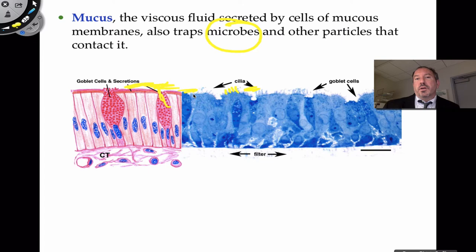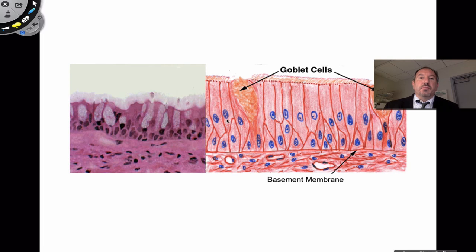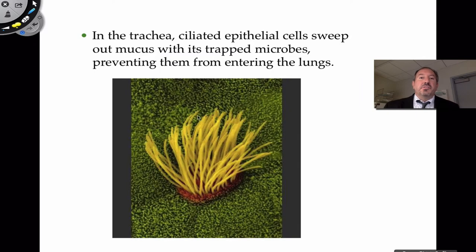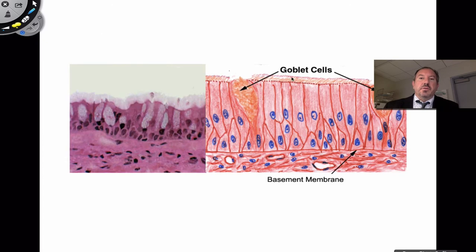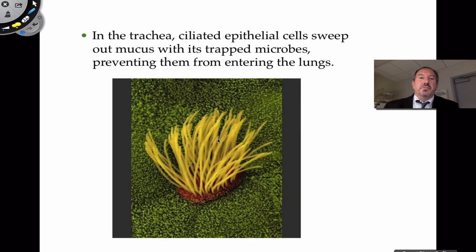If we breathe in germs into our trachea, they get caught up in the mucus and come back out, and we swallow them and destroy them. This is an example of pseudostratified ciliated columnar cells that make up the mucus membrane of the respiratory system — they're nonspecific. Here's an awesome picture of cilia on those cells that help to sweep microbes out of the respiratory bronchial tree, preventing them from entering the lungs where they can cause damage.